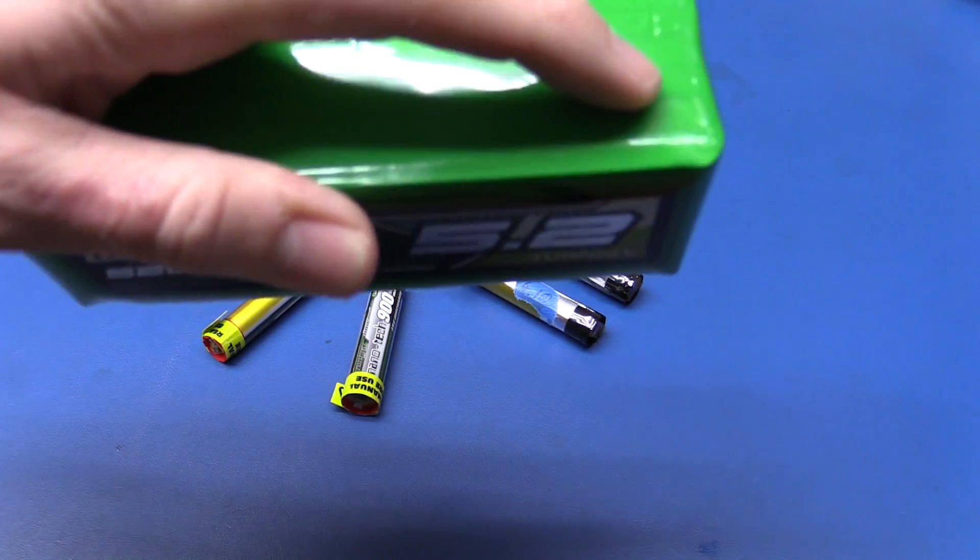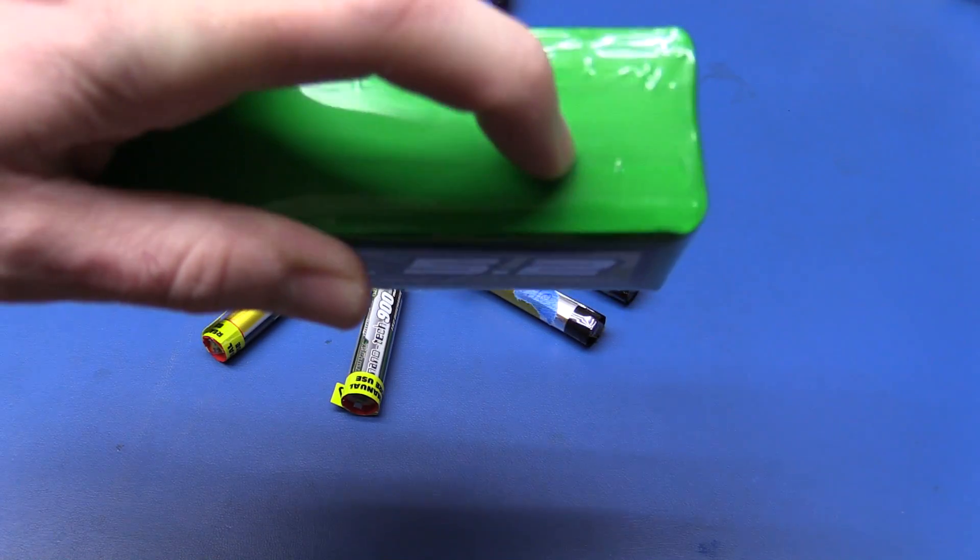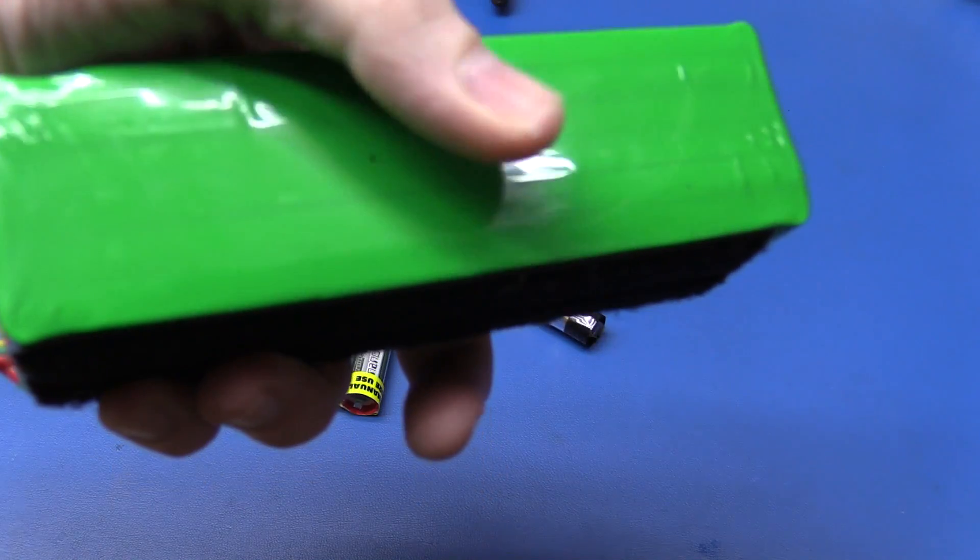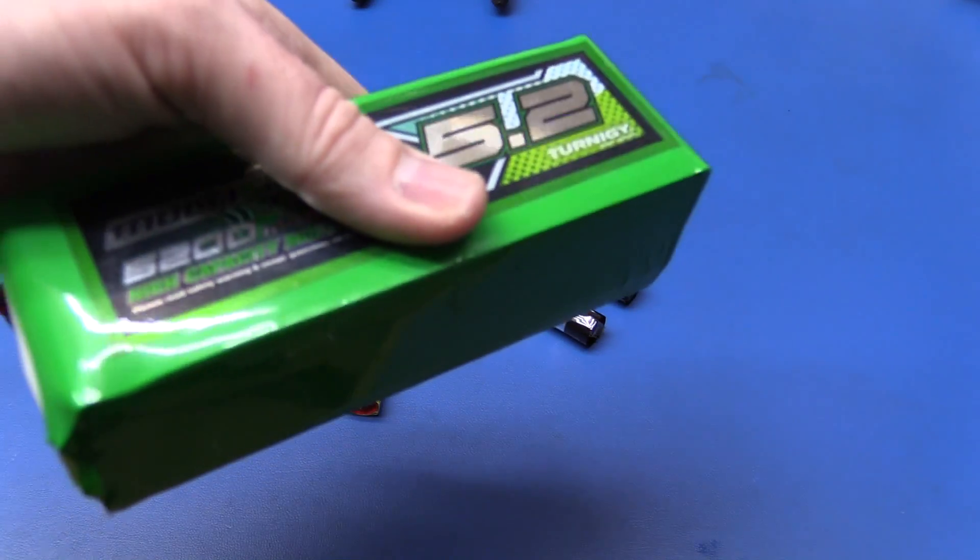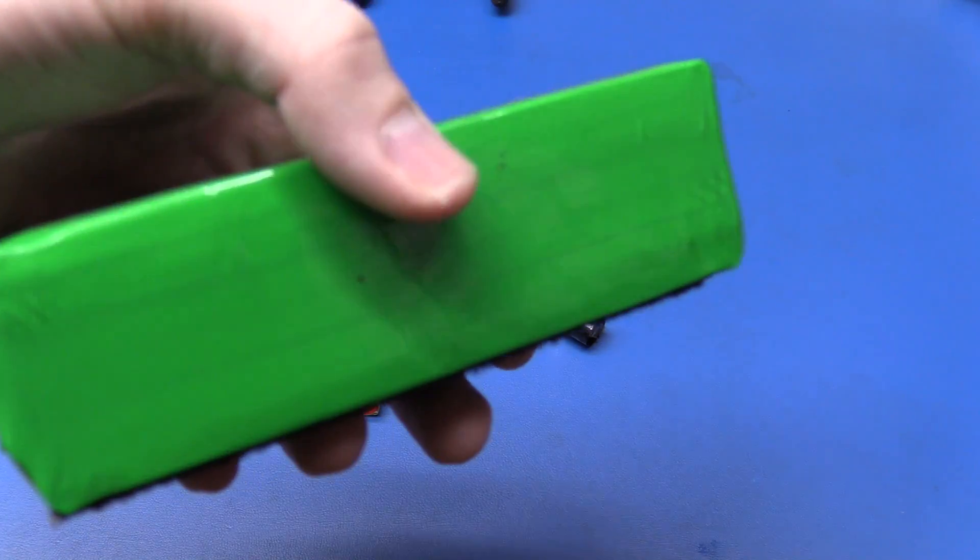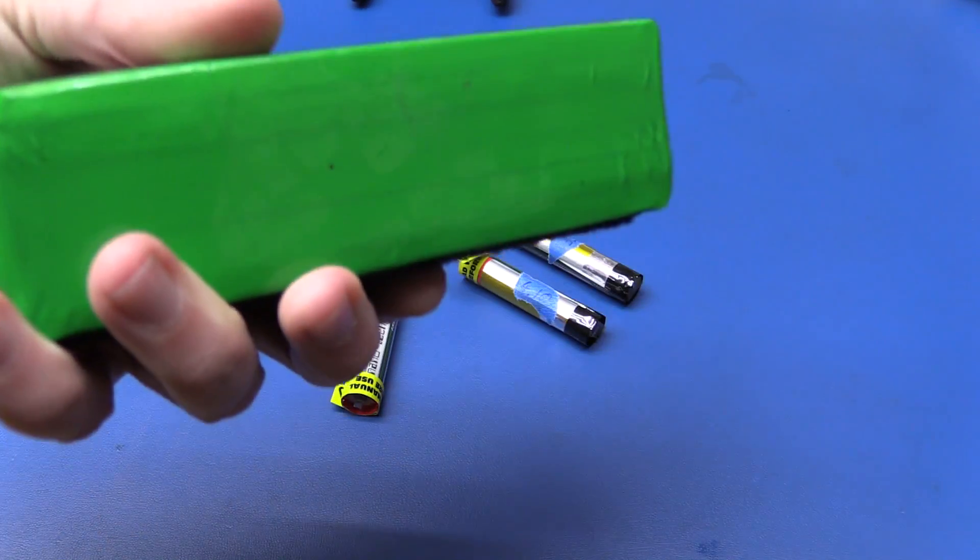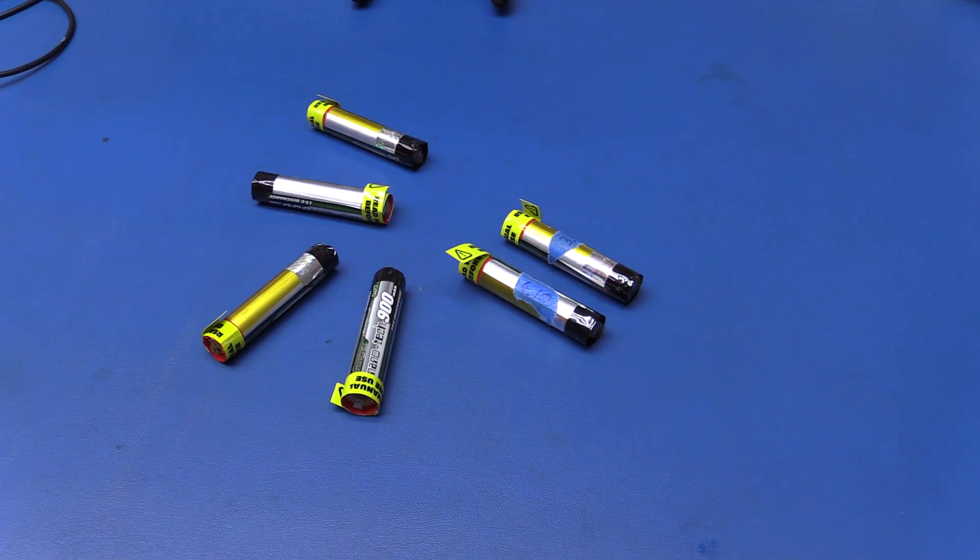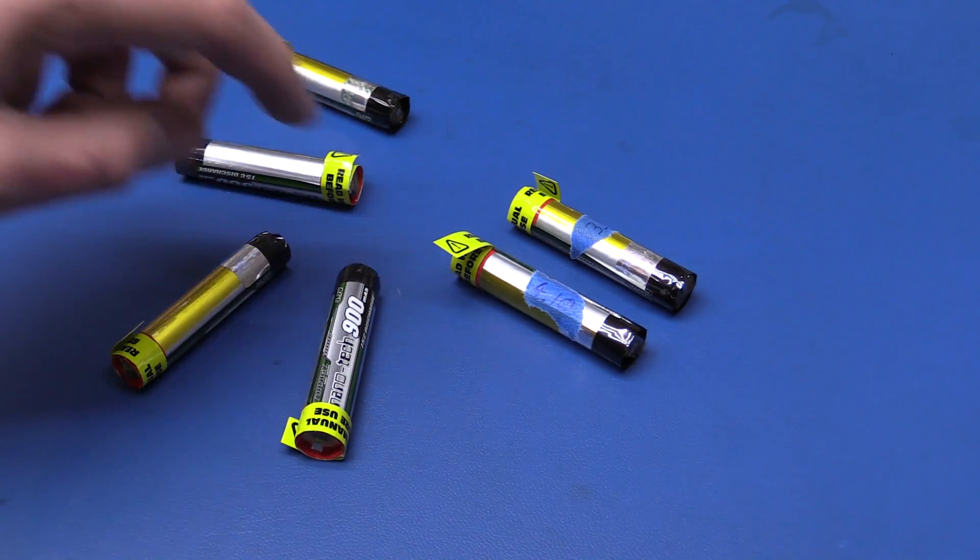But apparently one of the cells were bad and it had very low capacity, so it got discharged too far down. It needed to be replaced anyway, but perhaps I could have avoided it swelling up and almost exploding if I had just measured it before I charged it.